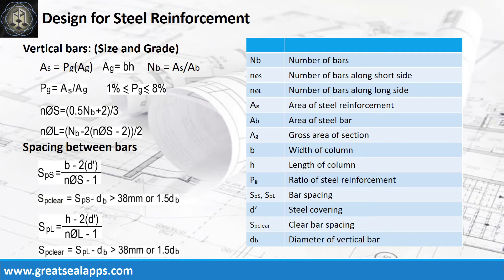Solve the area of steel from the steel ratio and gross area of section to get the number of vertical bars, followed by the number of bars for the short side and number of bars for the long side. Then get the spacing between bars and check the clear spacing between bars.